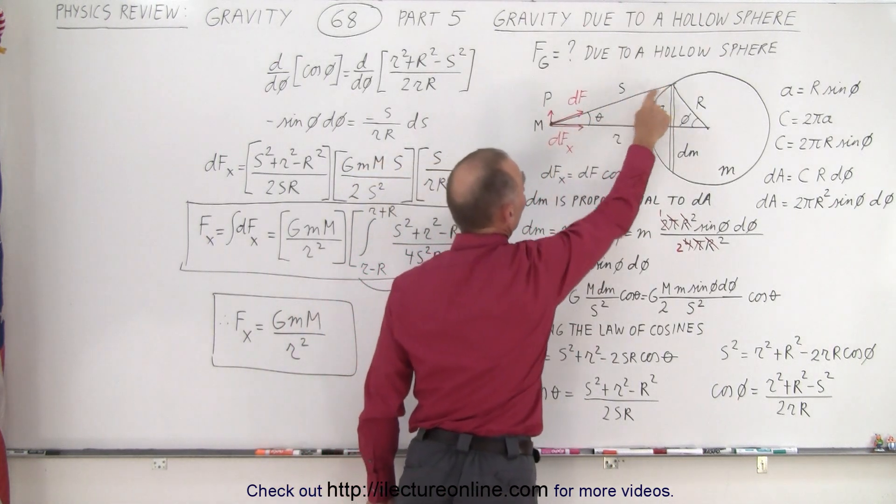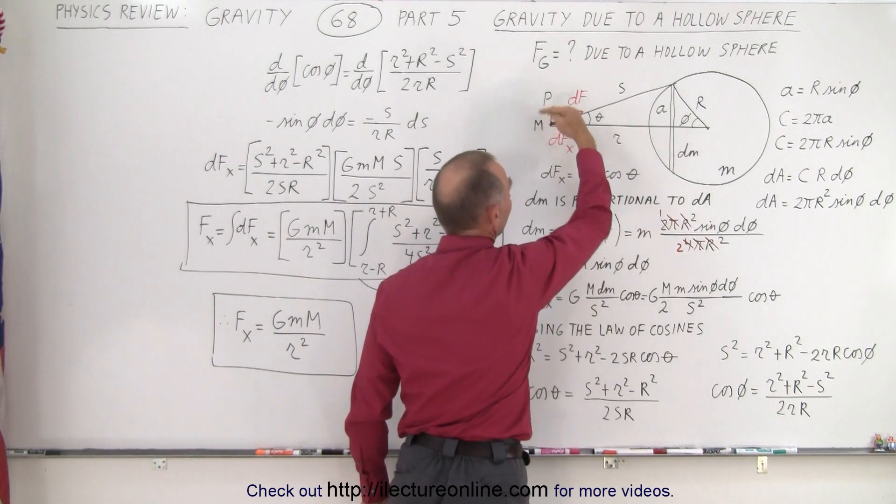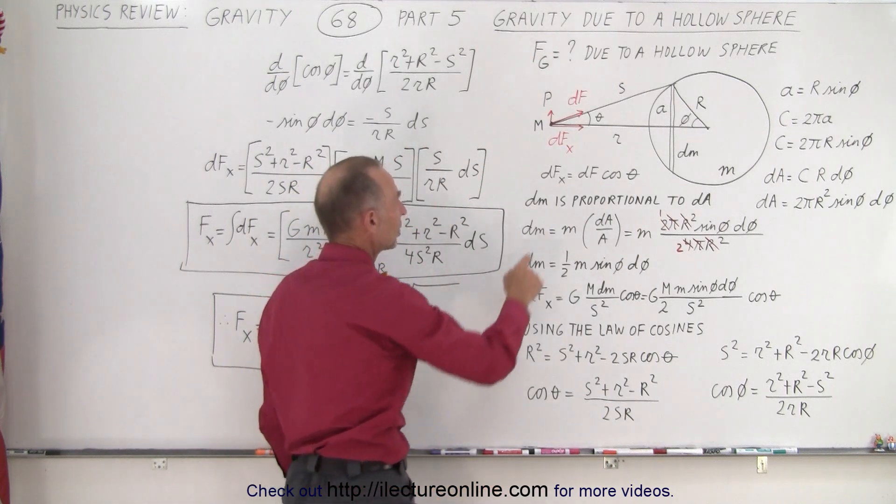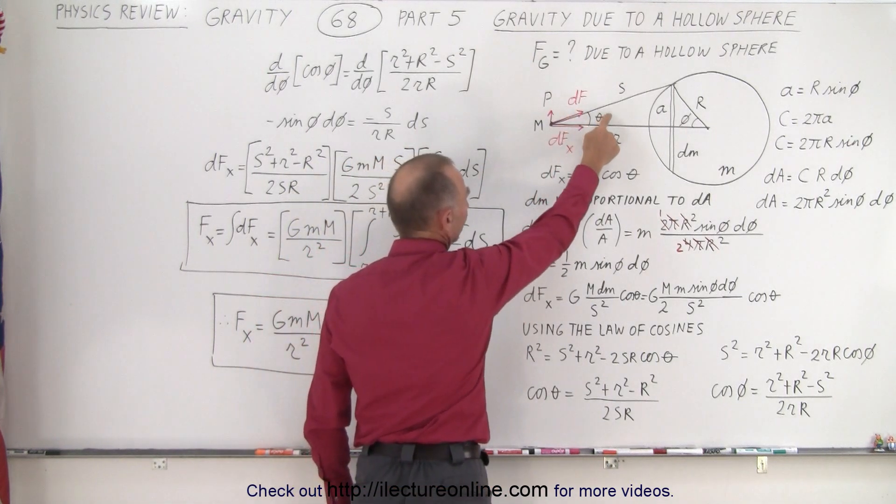and then of course, we don't want this force right here, we want the horizontal force because the vertical force cancels out as we integrate around the whole band. So we just want dF_x, which is equal to dF times the cosine of the angle.